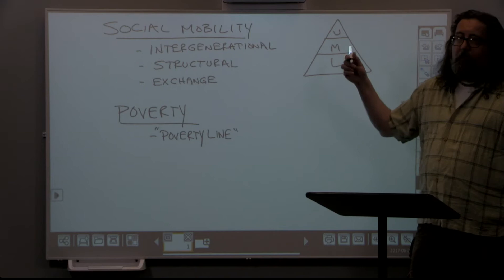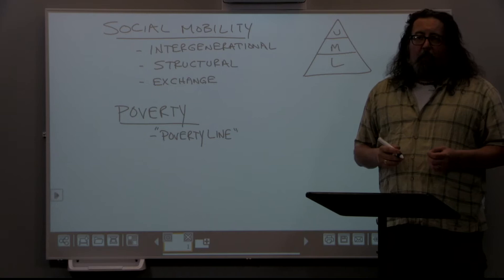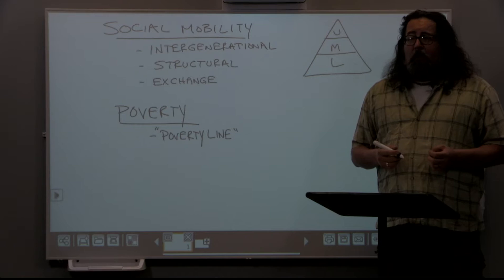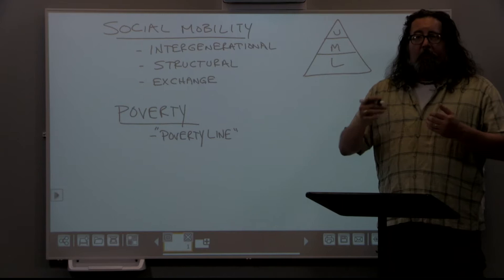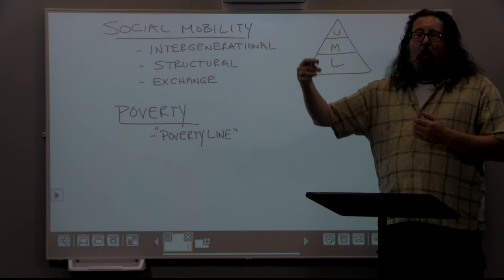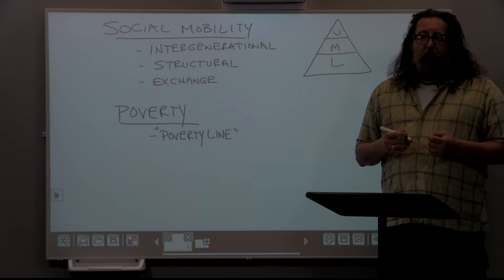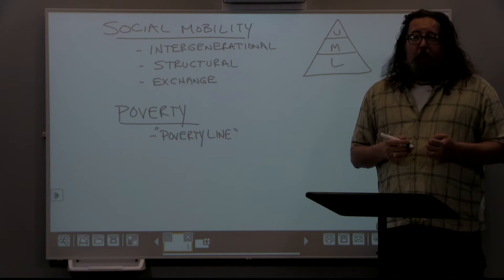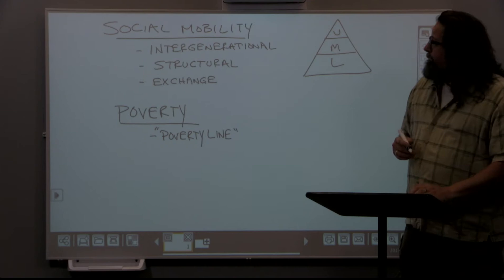Intergenerational social mobility is often used as an important benchmark when we look at society overall. When we say a society is doing well, it's because we generally see that generations are doing better than those who came before. If children of parents in the country for more than one generation are not doing as well as their parents, that's a pretty big concern for policymakers — why don't people seem to be succeeding along generational lines?